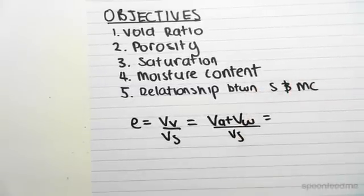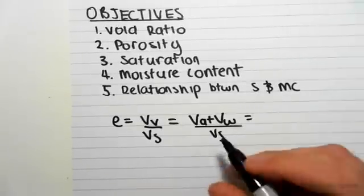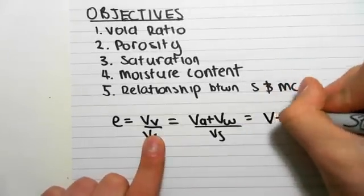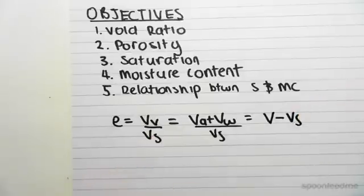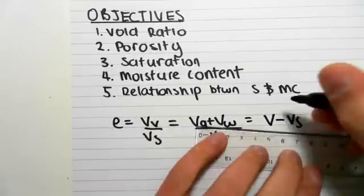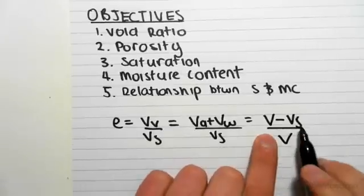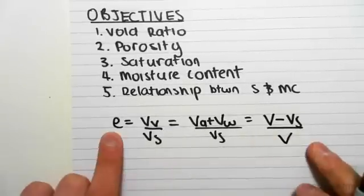Something else which is quite neat, this comes up a bit, is just to notice as well that we can rewrite the volume of the voids as the total volume minus the volume of the solids. Just keep this relationship in mind because it does come up sometimes when you're only given the total volume and the volume of the solids. You can still find the void ratio.